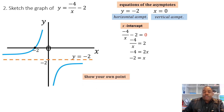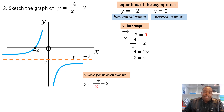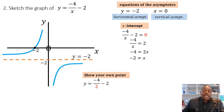We also need to show an extra point on the curve that has no x- or y-intercept. Choose a strategic x-value — let's pick x = 2 to get a clean number. Substituting: y = -4/2 - 2 = -4. So the point is (2, -4). Show this point on the sketch, and the full sketch is complete.